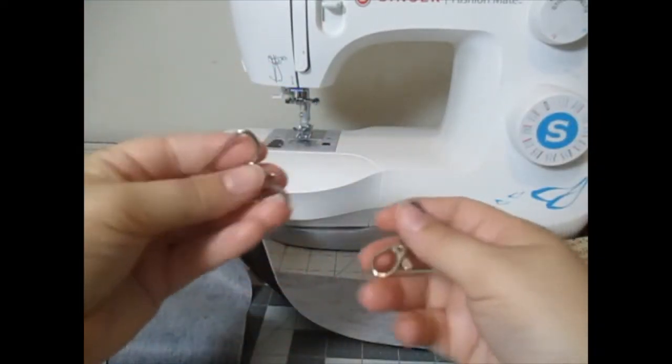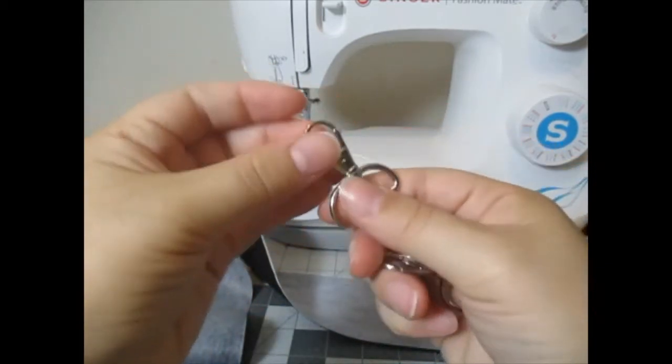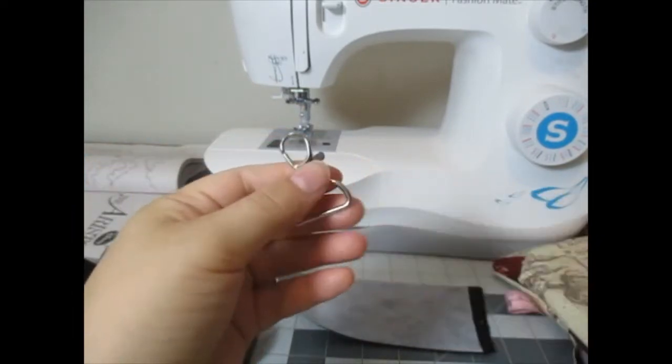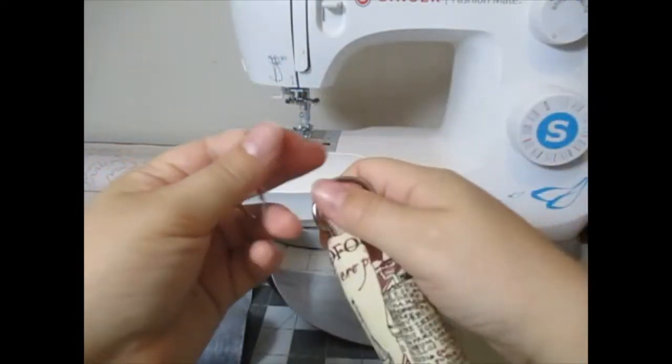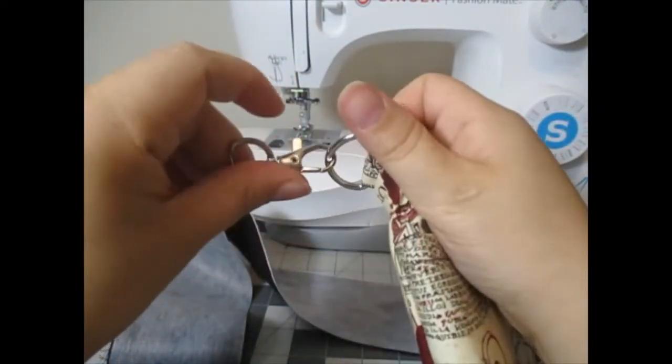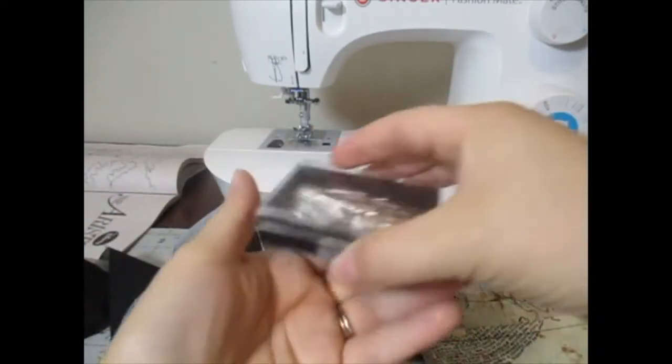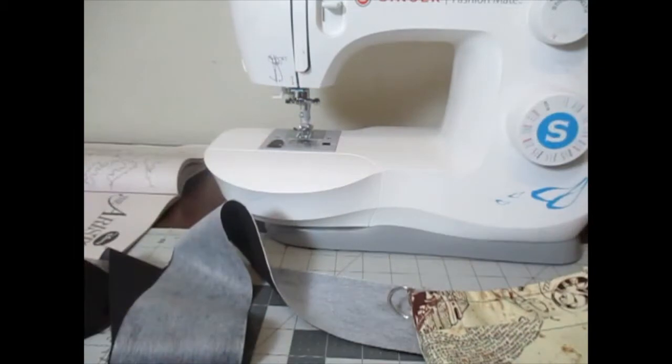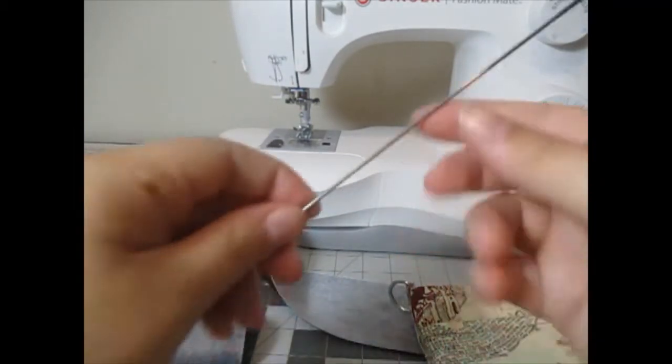And you're also going to need some d-rings or something to attach the strap to. These have lobster claws on the end so that when the strap is all made, it can be removable. You'll also need some pins, a sewing machine, some thread, a scissors, and a loop turner.